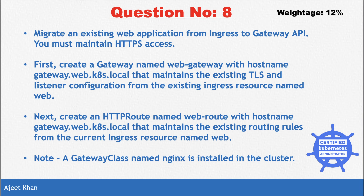We are now at question number eight, which is about migrating an existing web application from ingress to Gateway API. The weightage of this question is 12 because it is a bit complicated, and this is a must-do question — you are very likely to face this in the exam.